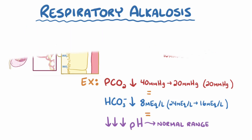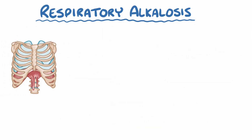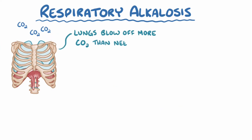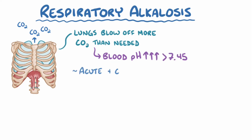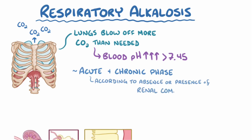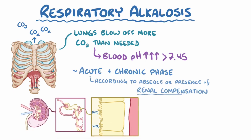As a quick recap, respiratory alkalosis happens when the lungs blow off more carbon dioxide than needed, which causes blood pH to increase above 7.45. It can be divided into an acute and a chronic phase according to the absence or presence of renal compensation, respectively, which decreases bicarbonate concentration in the blood.